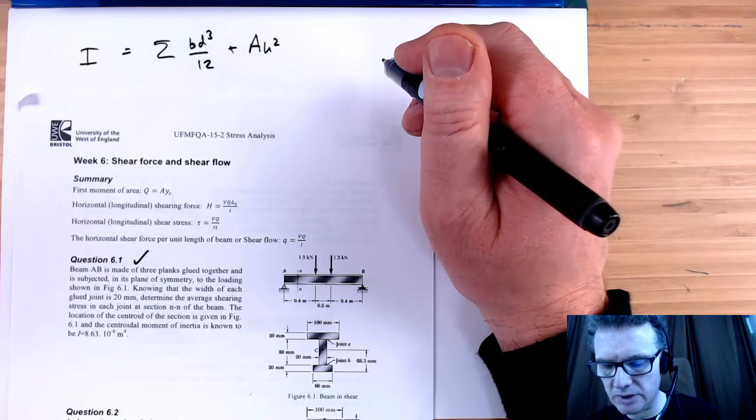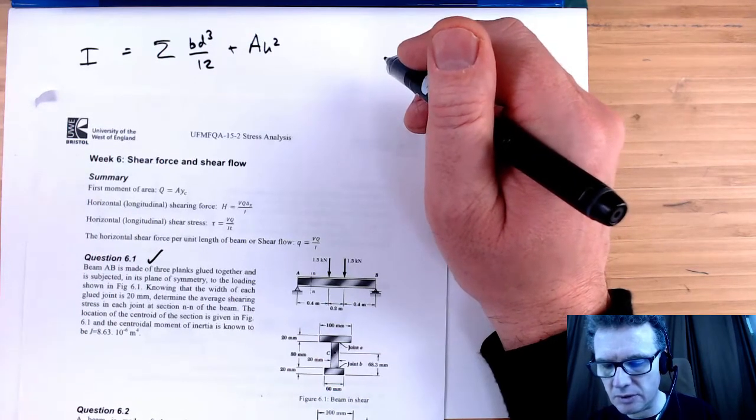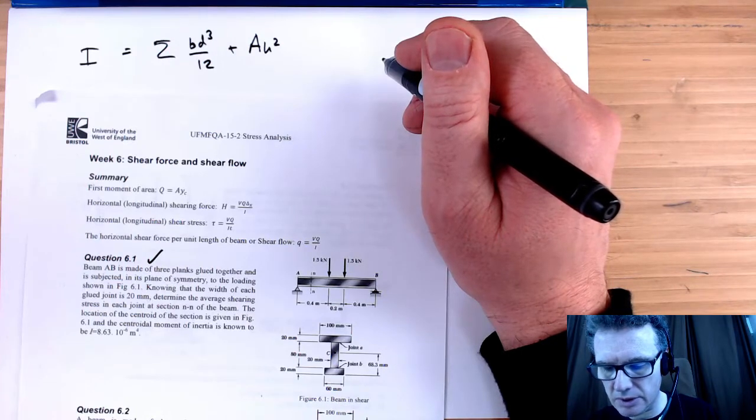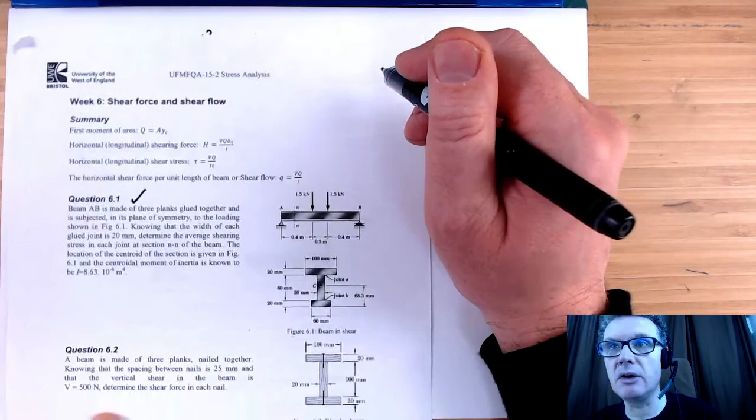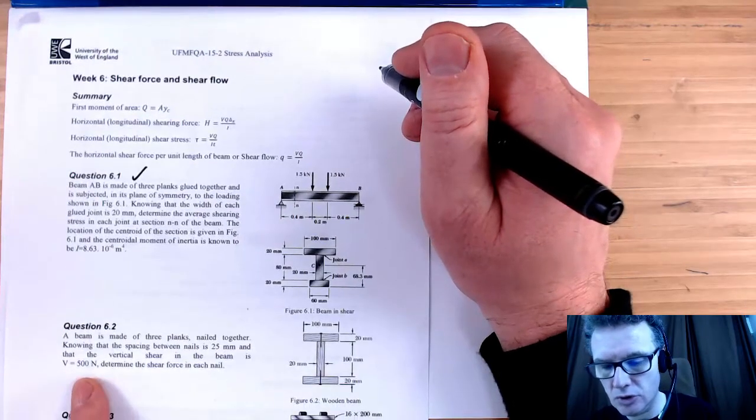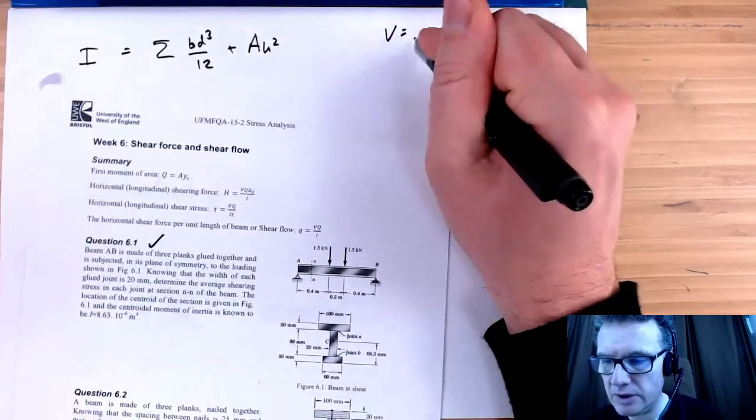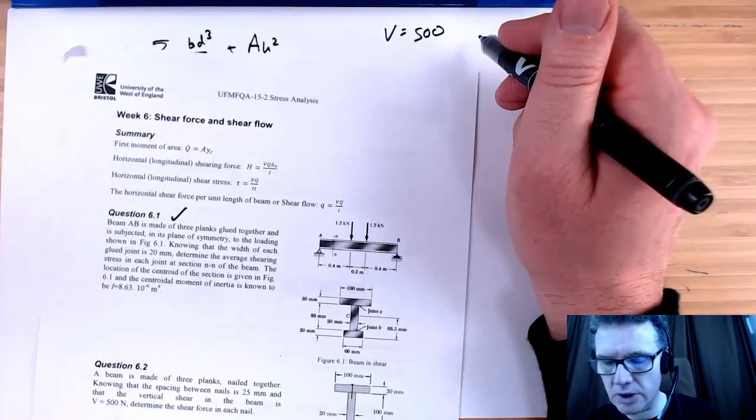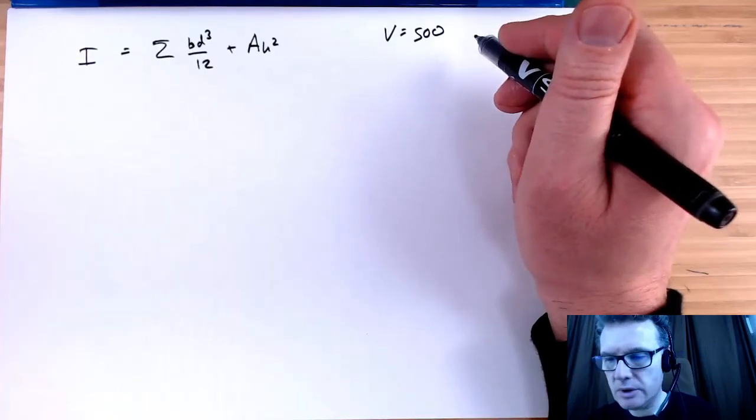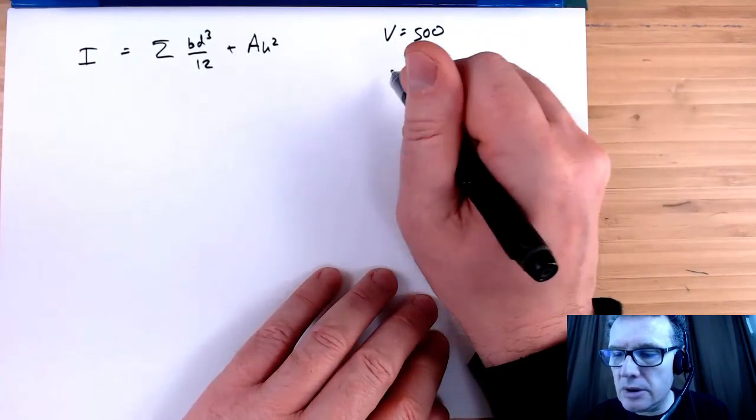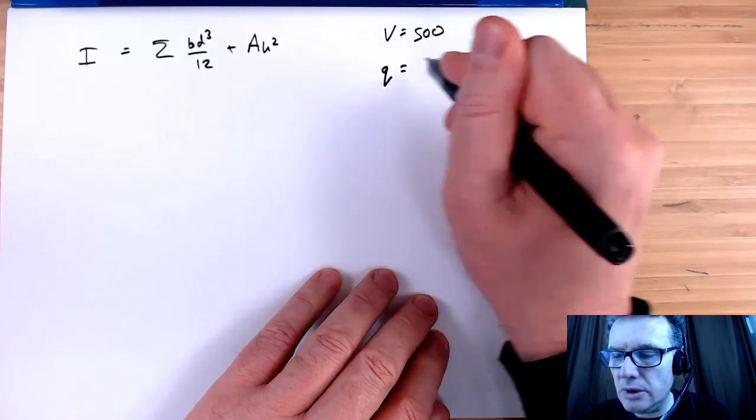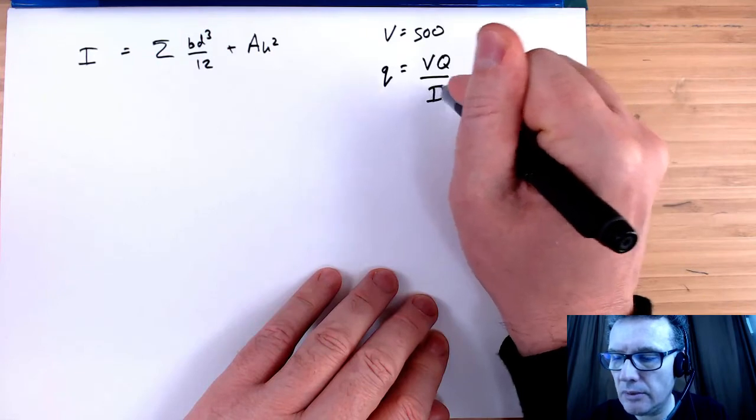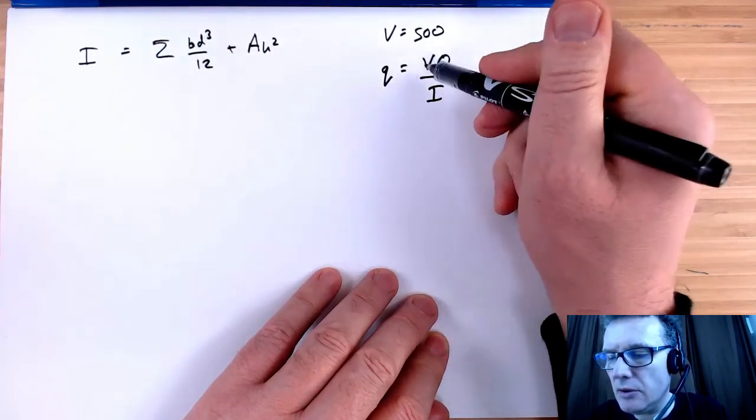What is the vertical shear in the beam? The vertical shear in the beam is 500 Newtons. So I've been told V, V is 500. Determine the shear force in each nail. So I remember that q equals VQ over I, and that's the force per unit length.